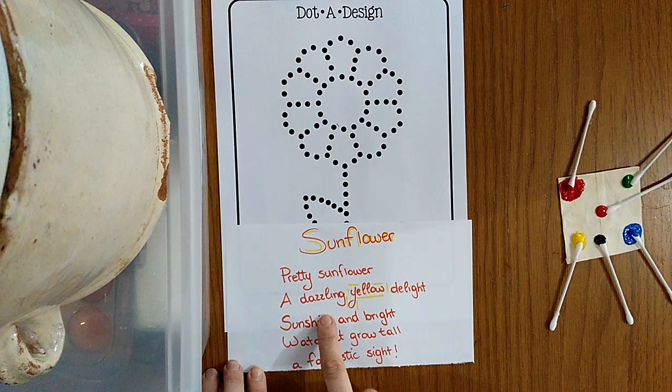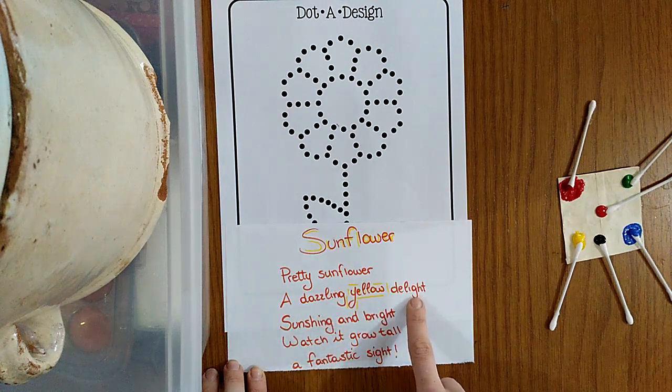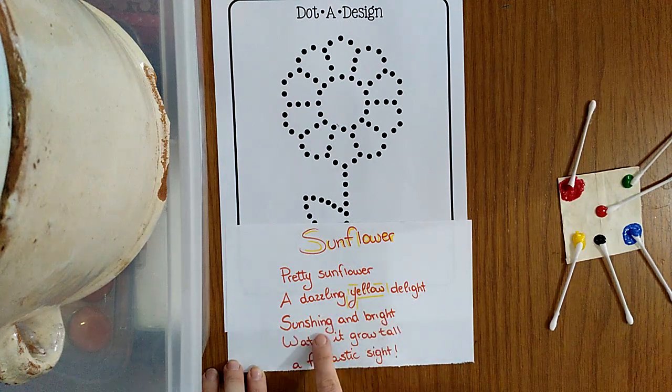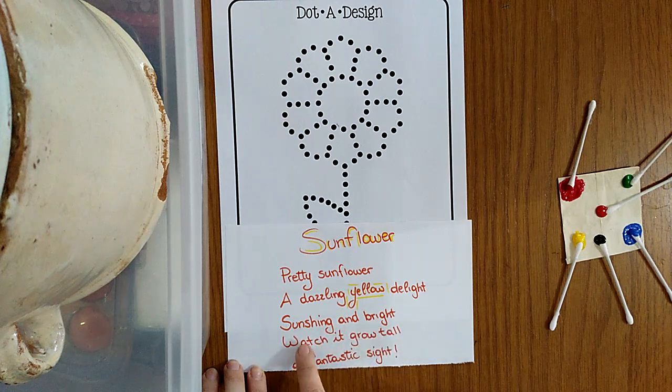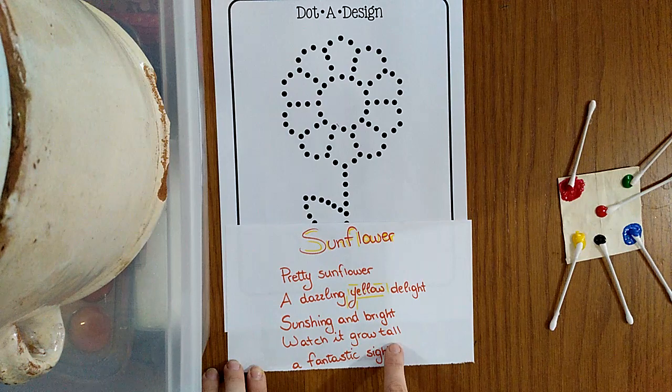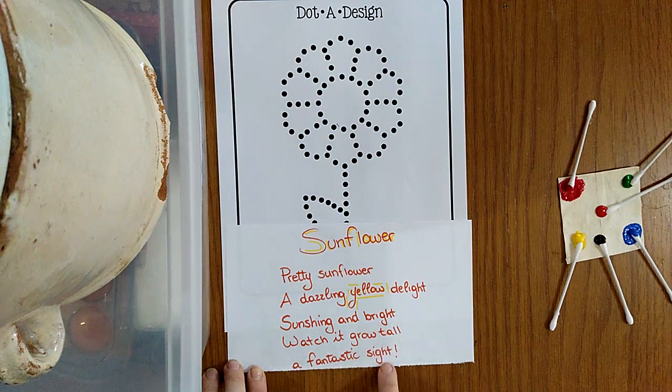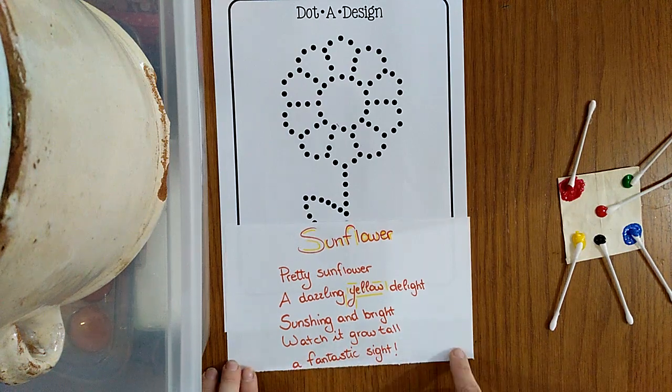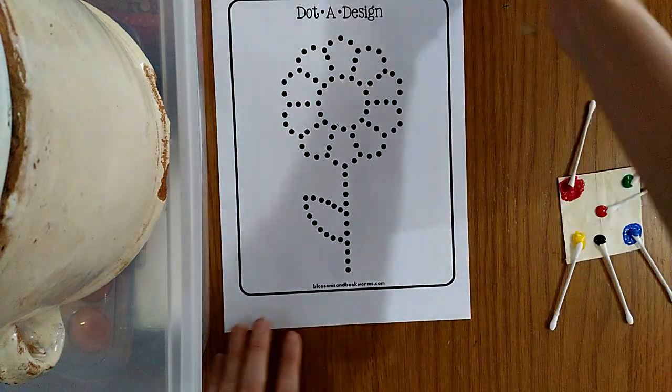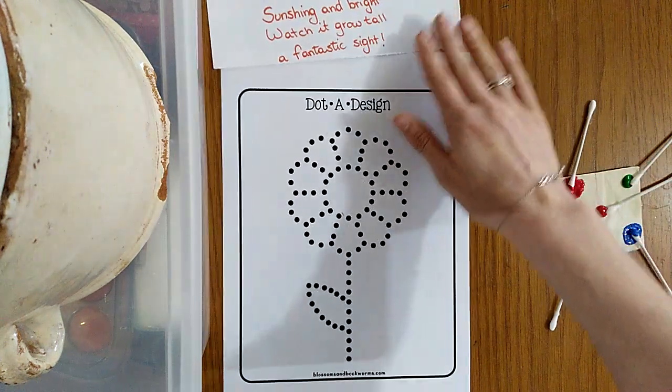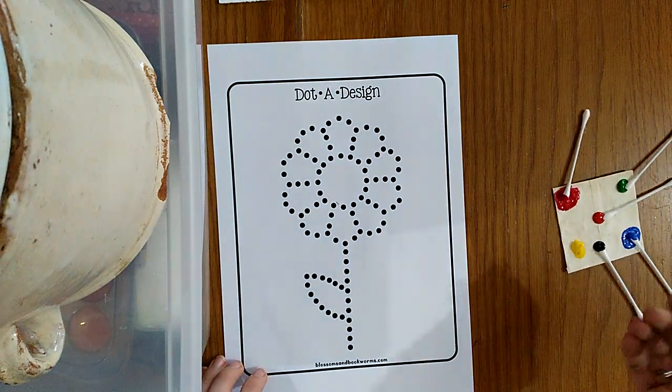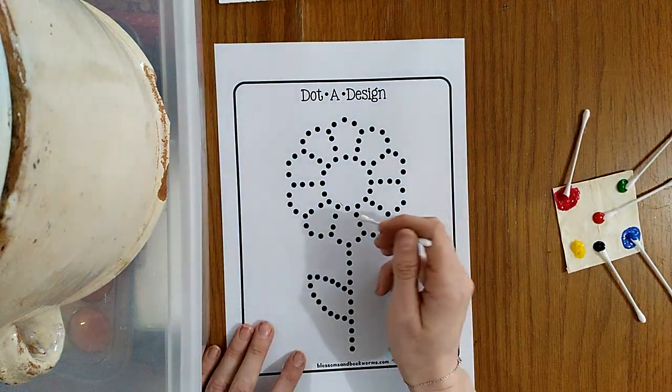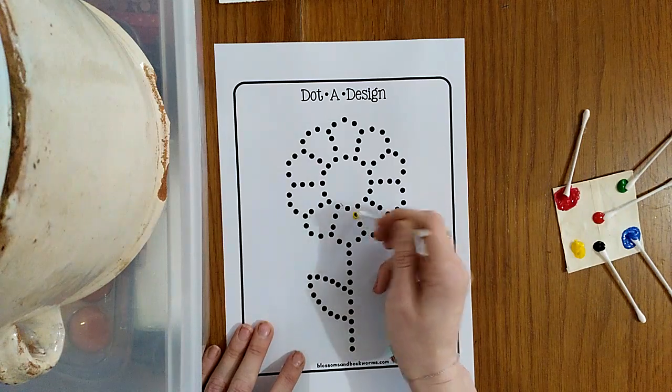So pretty sunflower, a dazzling yellow delight. Sun shining and bright. Watch it grow tall, a fantastic sight. So you can repeat the poem while we do our sunflower. Our sunflower is yellow, just like the poem said.